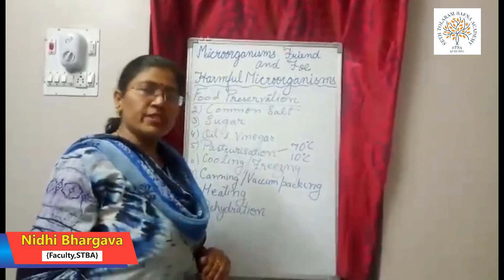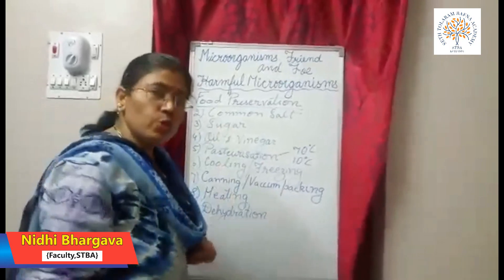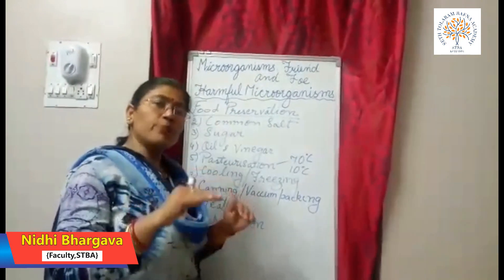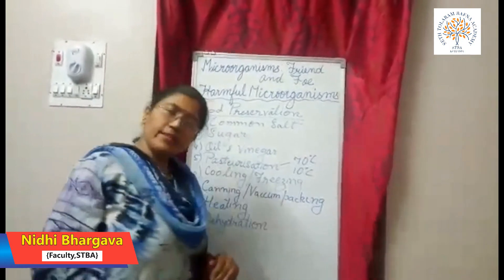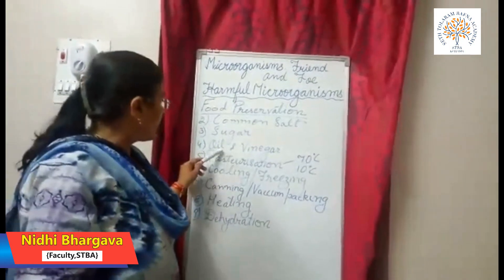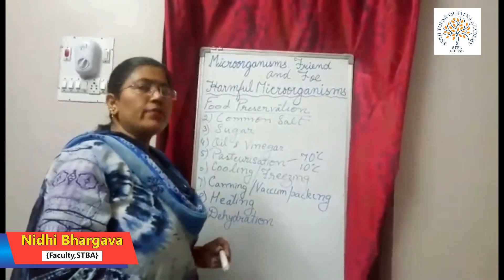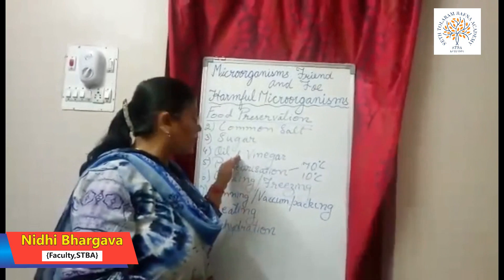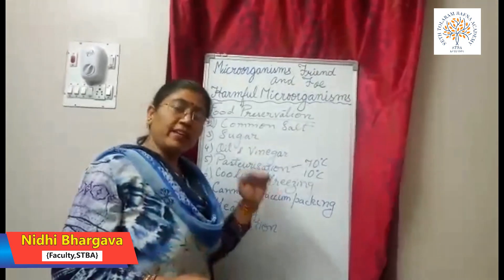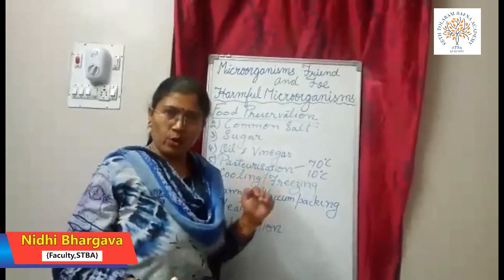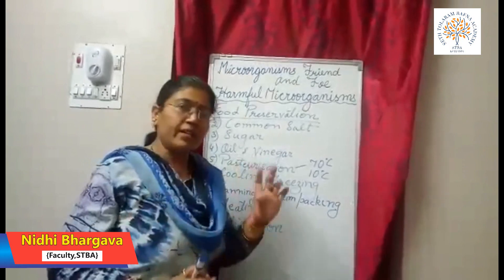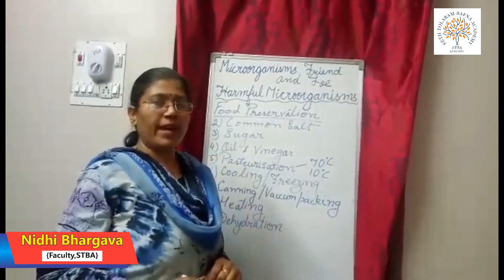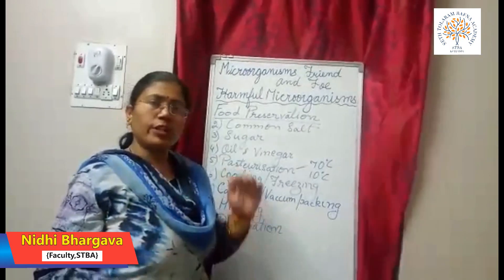The next method is preservation by sugar. Sugar is used to preserve jams, jellies, and fruits, and it also stops the growth of microbes. Another method is preservation using oil and vinegar. Oil and vinegar cut off the supply of oxygen to the food. Oil is used when making raw mango pickle, and vinegar is added along with oil to stop the growth of microbes in the jar so the pickle keeps for the whole year.